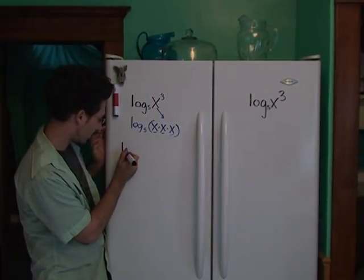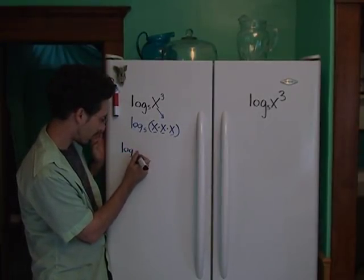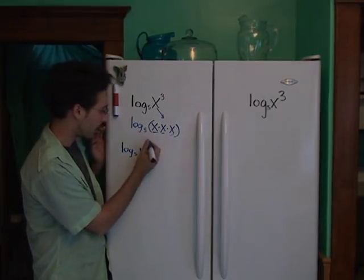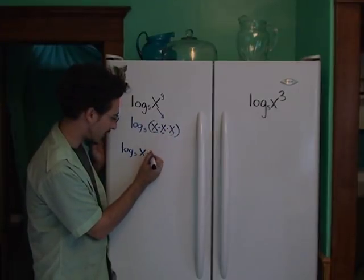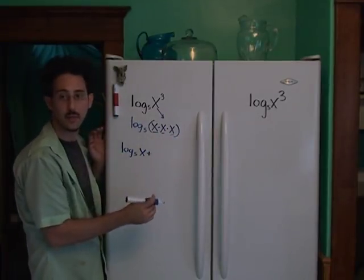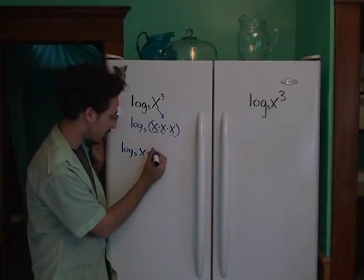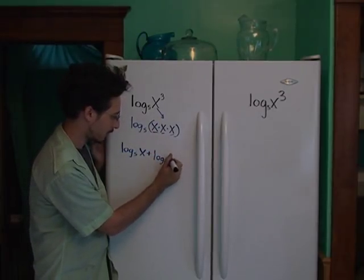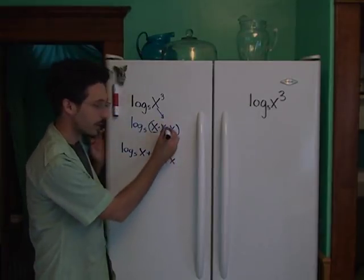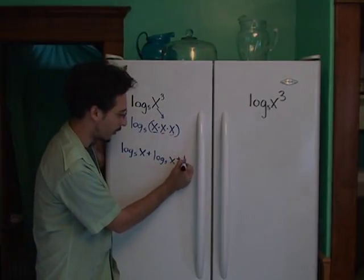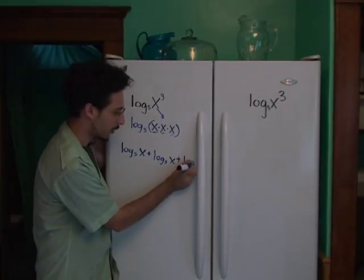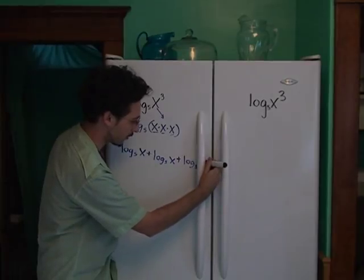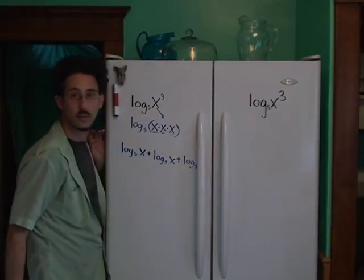So here's number 1. Log base 5 of our first x. Log base 5 of our second x. And we're adding, because adding and multiplying correspond to each other. And then we'll have log base 5 of our third x. And that's going to go behind the handle, but we know what it is. So there we go.